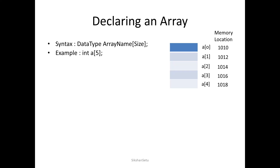Regarding memory addresses — since it is an integer array and integers occupy 2 bytes, if the first element starts at address 1010, the next is at 1012, then 1014, 1016, and 1018. Memory allocation follows a sequential pattern with a gap of 2 bytes. The array always starts from index 0, up to index size minus 1, so a[0] to a[4].